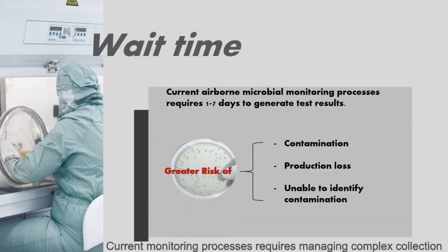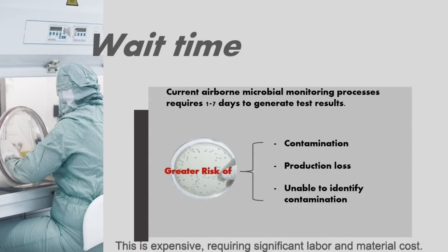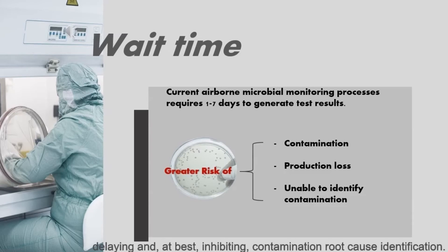Current monitoring processes require managing complex collection and manual growth examination schedules for thousands of air samples per month. This is expensive, requiring significant labor and material cost. This whole process takes 1 to 7 days to generate test results, delaying and inhibiting contamination root cause identification. This also does little, if anything, to prevent major production scrappage.